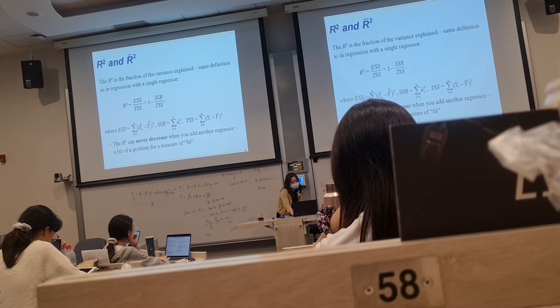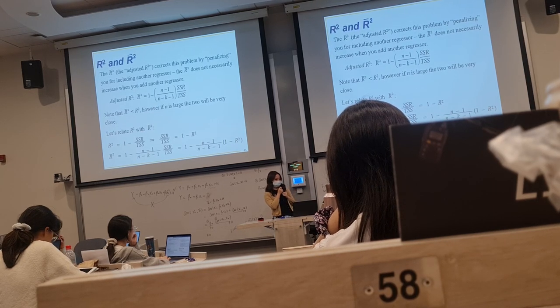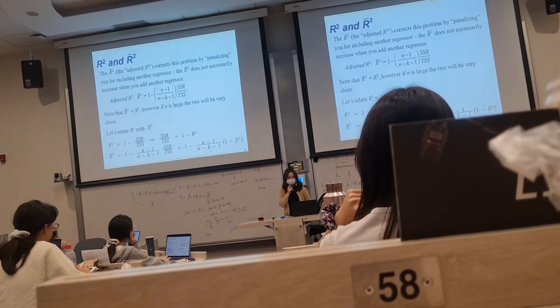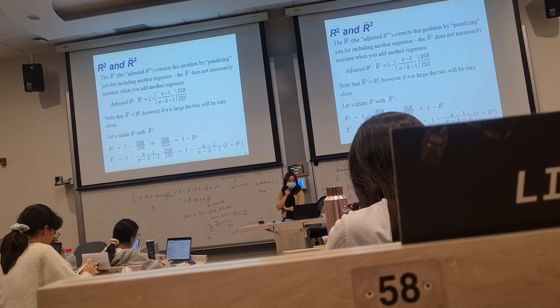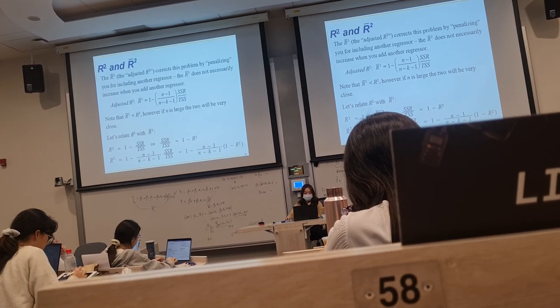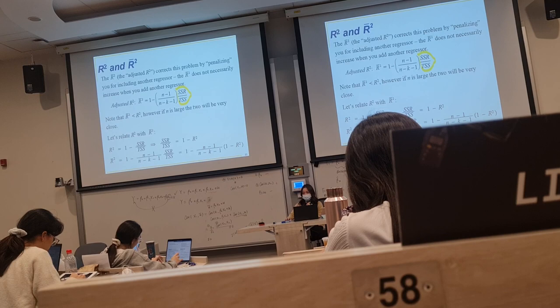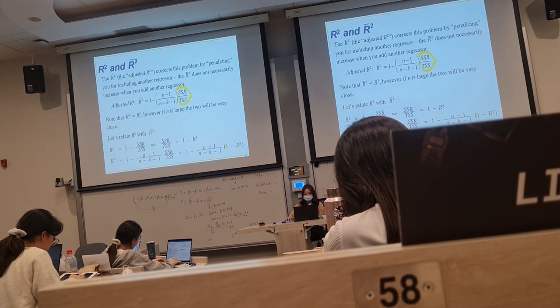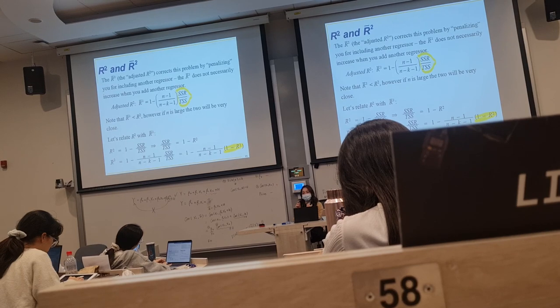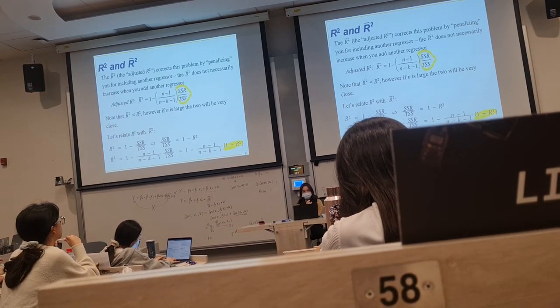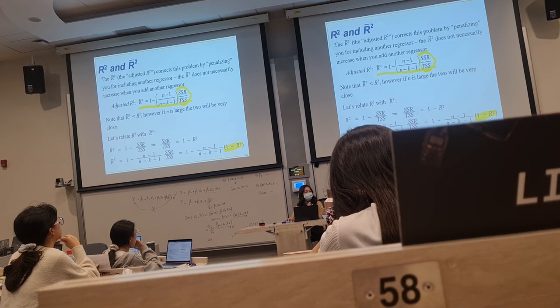So due to this drawback of R squared, the econometricians try to add a penalty for adding an extra regressor. And they develop the adjusted R squared, denoted as R squared bar. And according to the definition of adjusted R squared, this part, SSR divided by TSS, is just 1 minus R squared. So if the value of R squared is given, you can simply calculate the adjusted R squared using the definition.